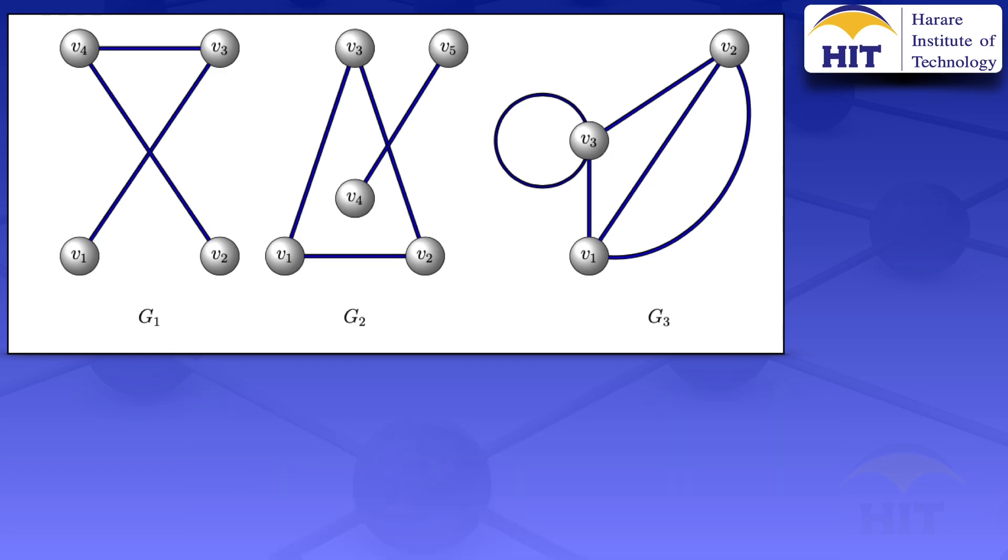So in this case, we see that the graphs G1 and G2 are loop-free using the definitions I've just talked about. Also, the graphs G1 and G2 don't have any parallel edges, and therefore they are simple graphs.